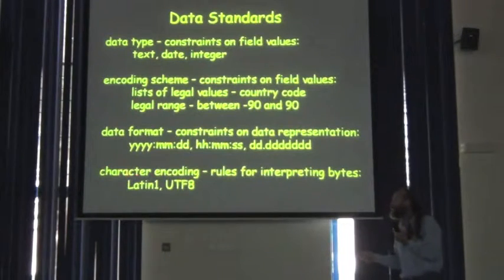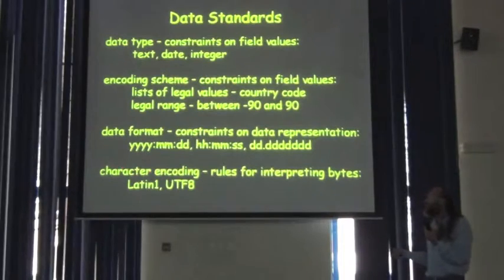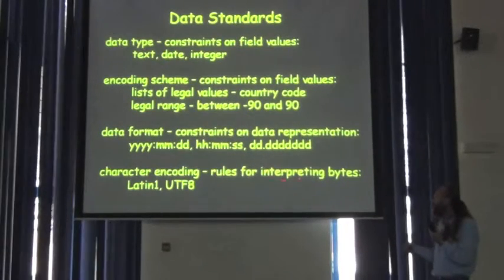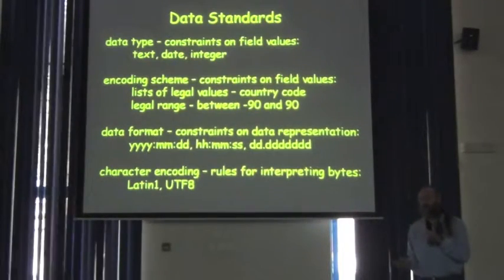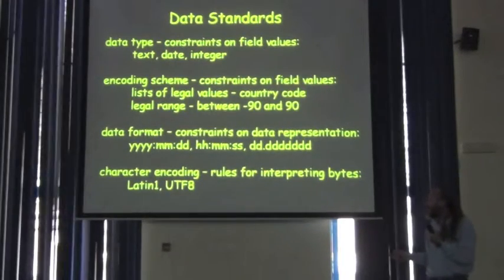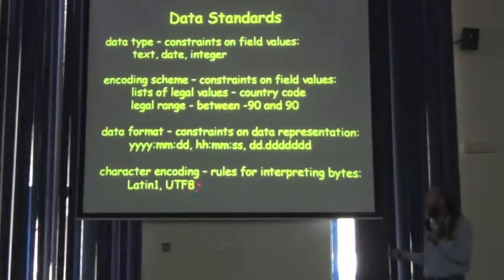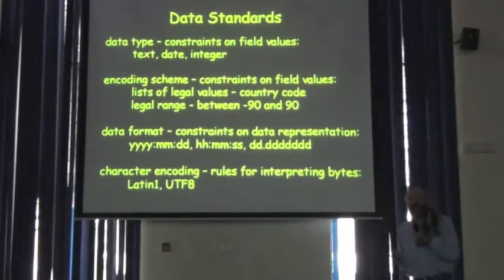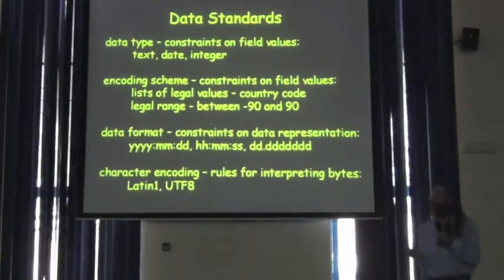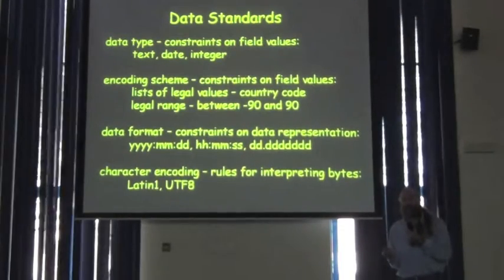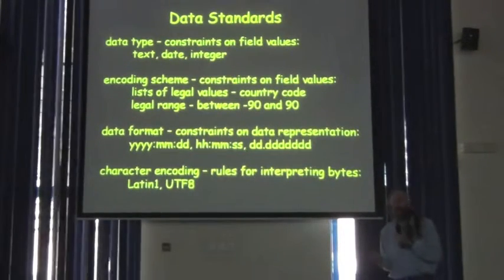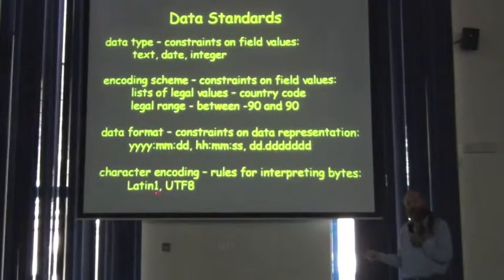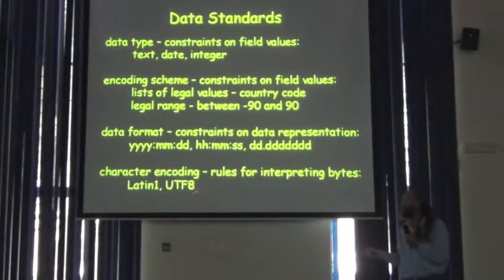Finally, we have character encodings. This may be the least familiar to most of you. Character encoding is a really low-level, essentially computer-based problem that says: what are the rules for interpreting an actual stream of characters or bytes in digital form? Two examples are Latin-1 character encoding and UTF-8 character encoding. These become important if you've ever had a spreadsheet with data from various languages, say French, and put it into Excel without the right encoding — you might see some strange characters appear. What's happening is a misunderstanding between the software and the character encoding. You'll see these as real problems later on in the course.